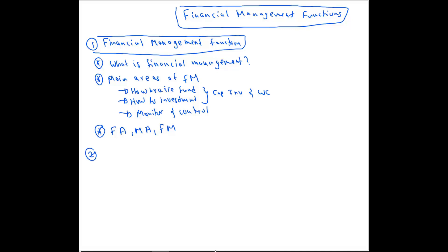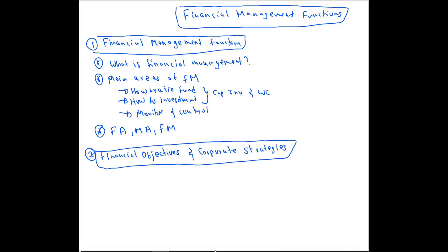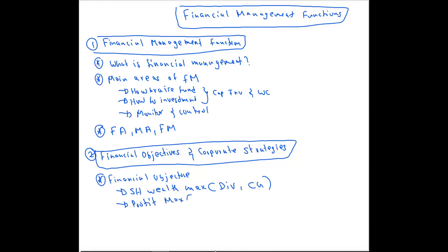The second main area that you should know is financial objectives and corporate strategies. Under that, the first thing is that there are three main financial objectives of an organization. First is shareholder wealth maximization — you have to talk about dividends as well as capital gain. Second is profit maximization, which involves increasing revenue and decreasing cost. Third is EPS growth, or earnings per share growth.